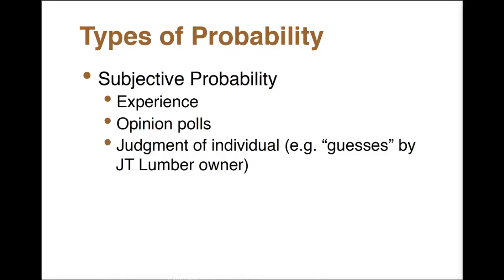The other type is subjective probability, based upon experience — like Mr. Thompson in his lumber company making predictions on high demand, moderate demand, and low demand. You also take opinions or polls, which is kind of what we're doing with the survey, along with individual judgment. So we have both objective and subjective probability, and we used a little bit of both in our previous example.